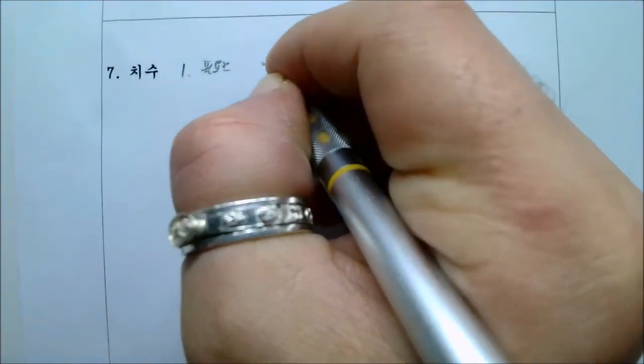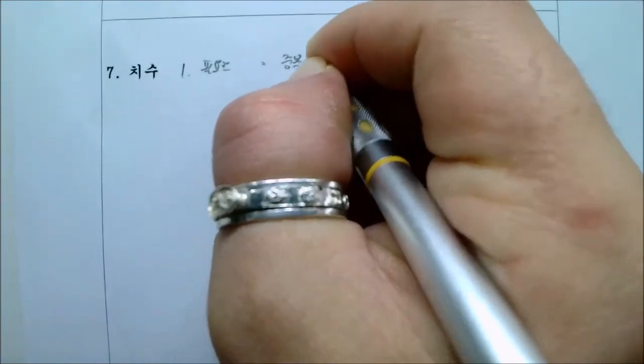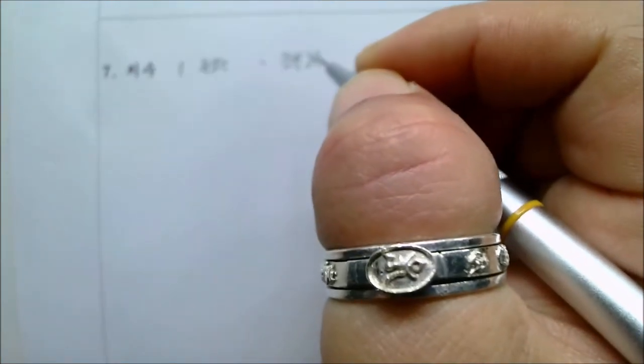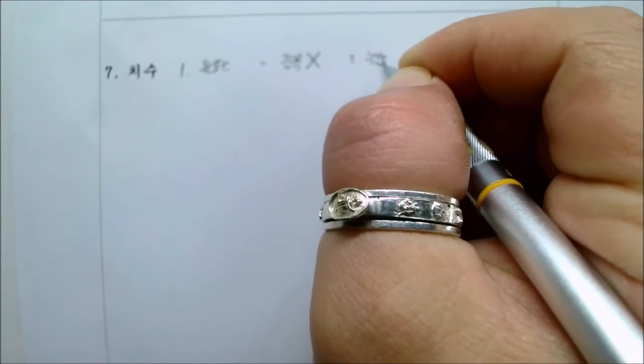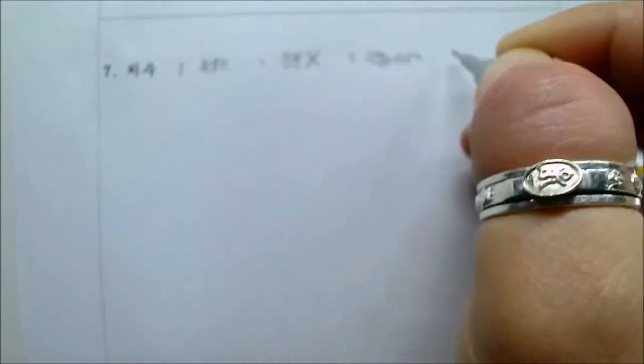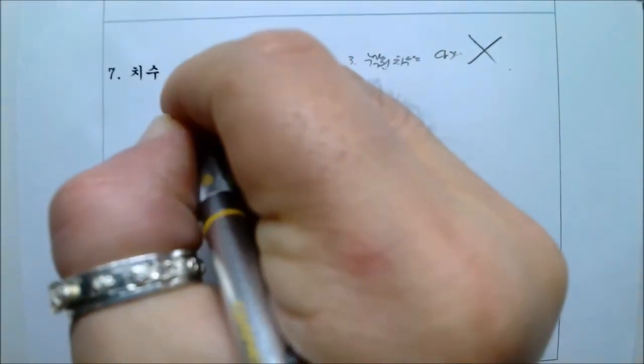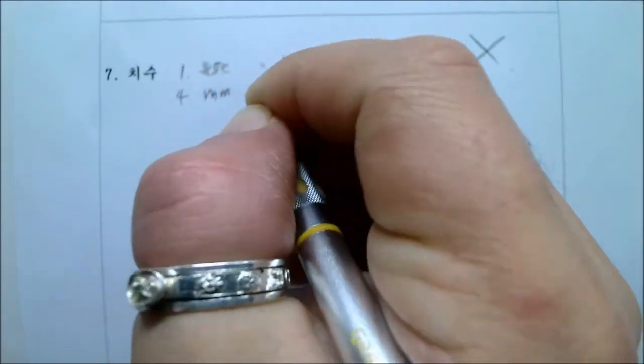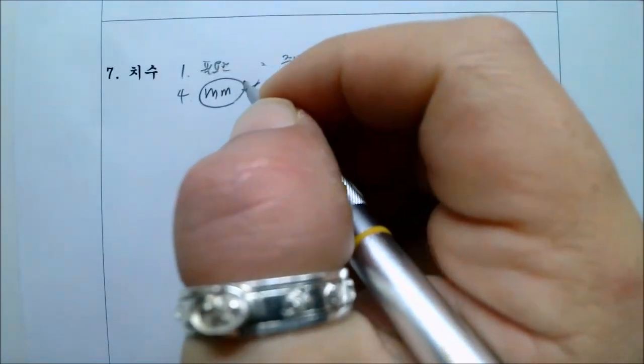그 다음에 두 번째, 중복은 피합니다. 무슨 말이죠? 그 다음에 세 번째, 누락된 치수를 다시 계산 안 합니다. 그리고 제일 중요한 것, 단위는 밀리미터. 이해하시겠죠?